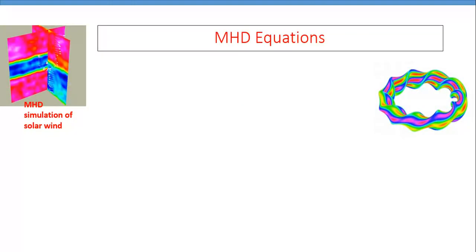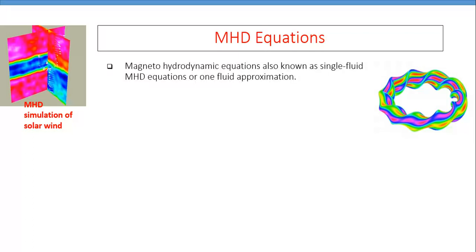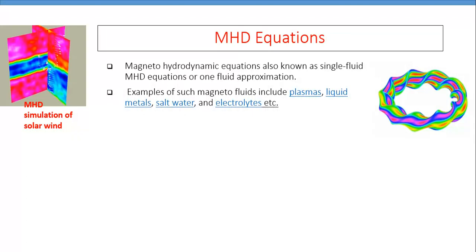MHD here means magnetohydrodynamic equations, where the word magneto means magnetic, hydro means liquid, and dynamic means in motion. A magnetohydrodynamic equation is also known as the single fluid MHD equations or the one fluid approximation.